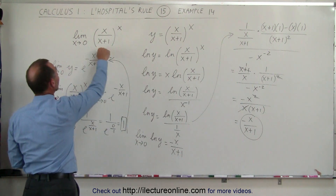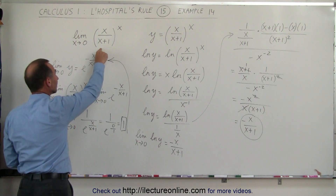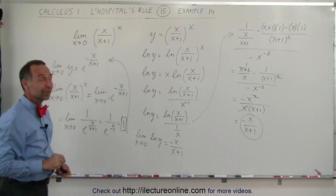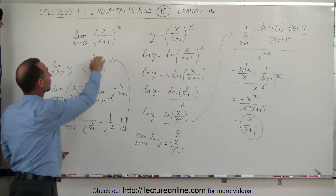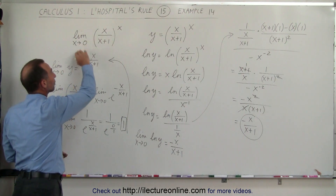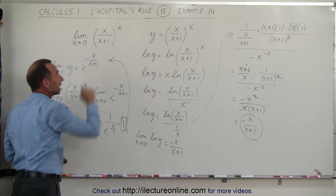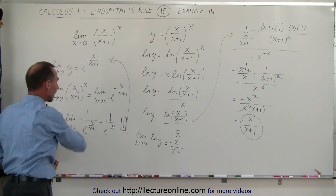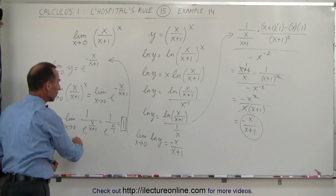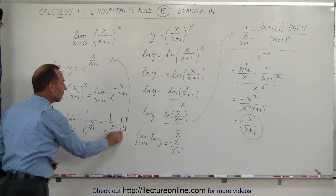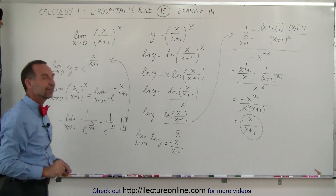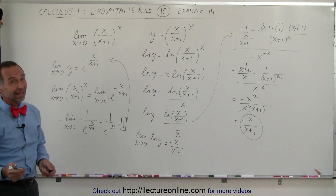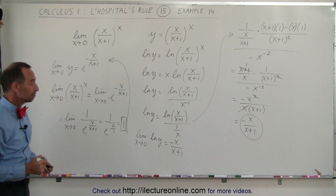The limit of our original function, even though it looks difficult to work with, we can find a way to get rid of the exponent by taking the natural log, and we finally work it out — the limit of that function is equal to 1 as x approaches 0. And that's how it's done.